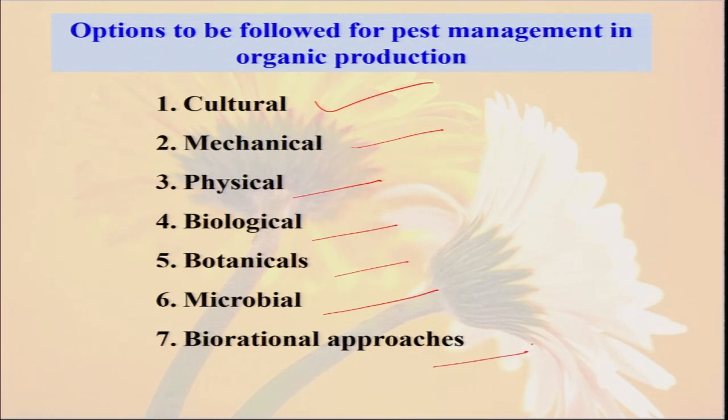We cannot rely only on chemicals. Most pest management or disease management practices in inorganic farming are based on the chemical method. But here we cannot rely on only one type of pest management or disease management option. From the seed and from the soil management, we have to take care of the field. If we have not taken care of insect pests and diseases at the initial level of crop growing, and the infestation is too high at a later part, then organically it will be very tough to control.